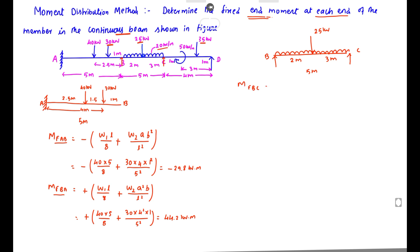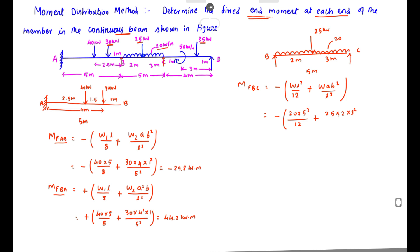For MF_BC, we use: minus W·L²/12 (for UDL) minus W·a·b²/L² (for the point load not at center). Substituting: minus 20 × 5²/12, plus 25 × 2 × 3²/5². Solving this, we get MF_BC = −59.67 kN·m.